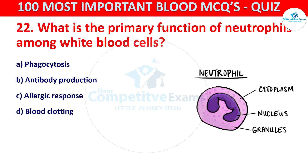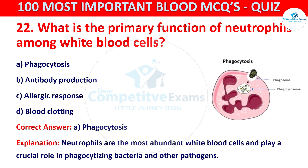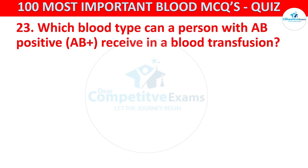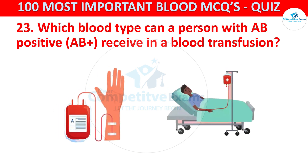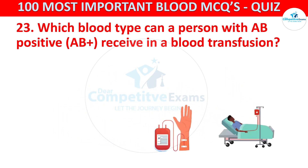The correct answer is A, that is Phagocytosis. Neutrophils are the most abundant white blood cells and play a crucial role in phagocytosing bacteria and other pathogens. Question 23: Which blood type can a person with AB positive receive in a blood transfusion?